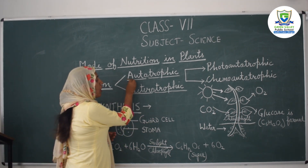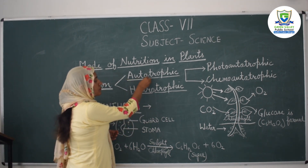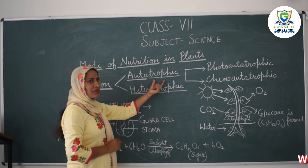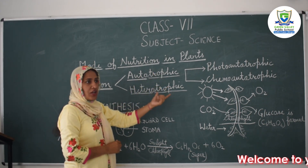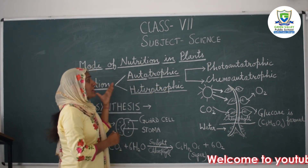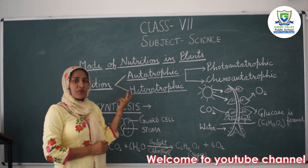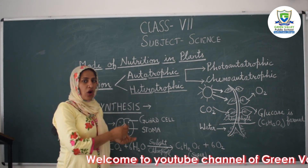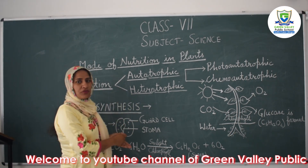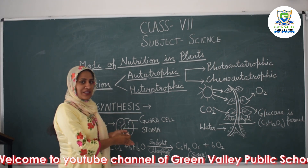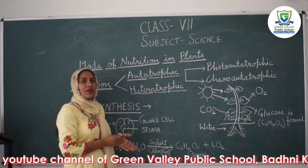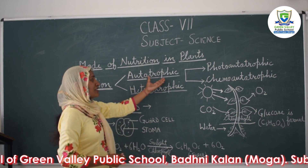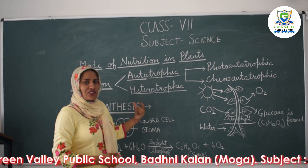The word 'auto' means self and 'trophic' means to nourish. So autotrophic means green plants make their own food and take nourishment.